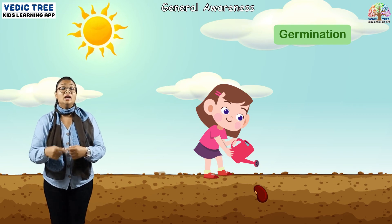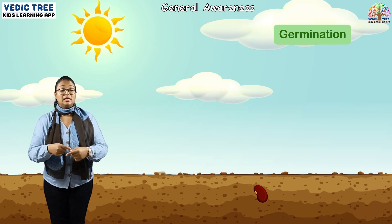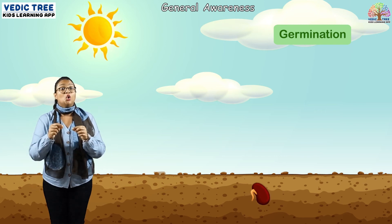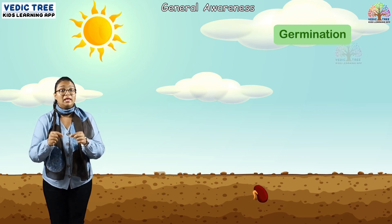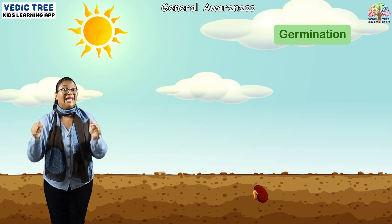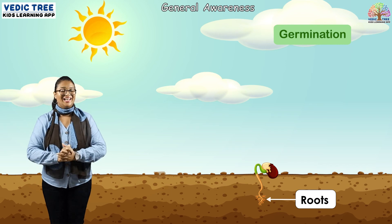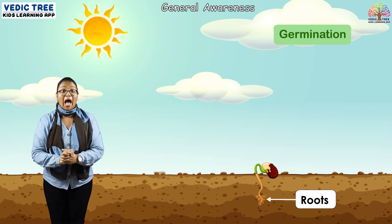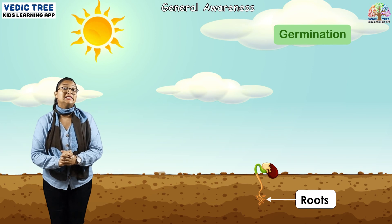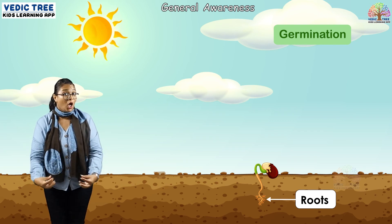After we water the seed, after a few days, roots begin to grow. Where do roots grow? In the soil. Roots — R-O-O-T-S — begin to grow in the soil.